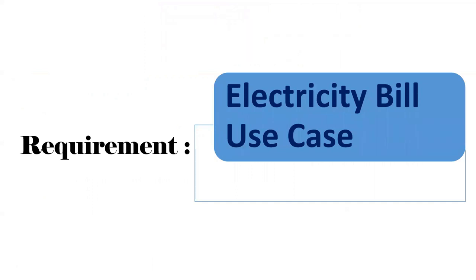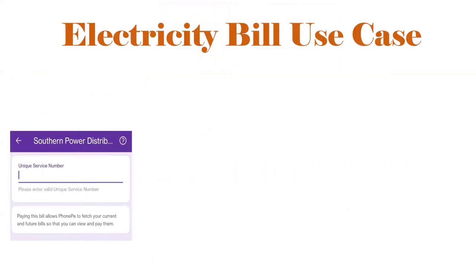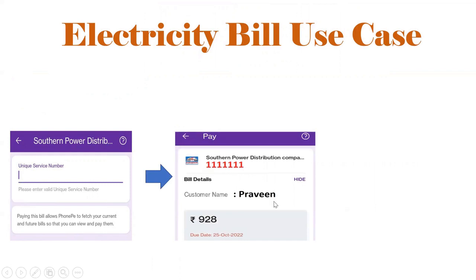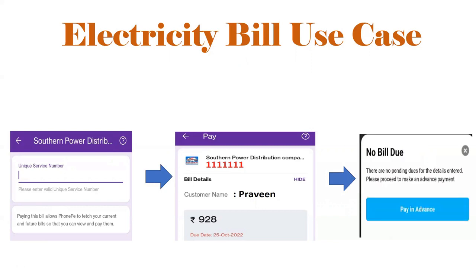Now let's revisit the actual requirement. The input is the USN number. If I pass the USN number, we need to get four outputs: customer name, bill amount, and due date. If the bill is already paid, we need to display 'No Bill Due'. So input is USN number; output is those parameters, and if already paid we select 'No Bill Due'.